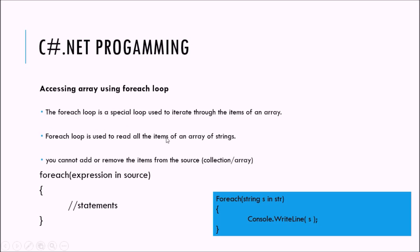Now we are going to use the for-each loop to access array elements. The for-each loop is a special loop used for iterating through the items of an array or collection. However, when using a for-each loop you cannot add or remove items from the source collection, to avoid unpredictable side effects. The syntax is: foreach (expression in source), where source can be an array or collection, followed by the statements you want to execute.